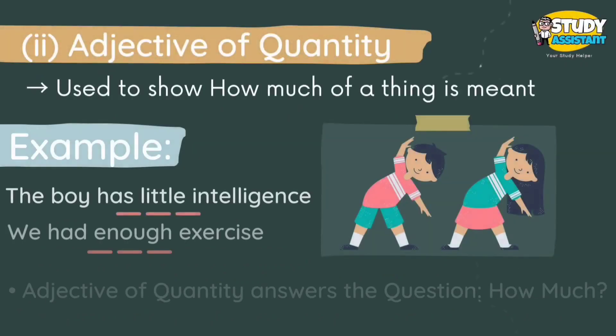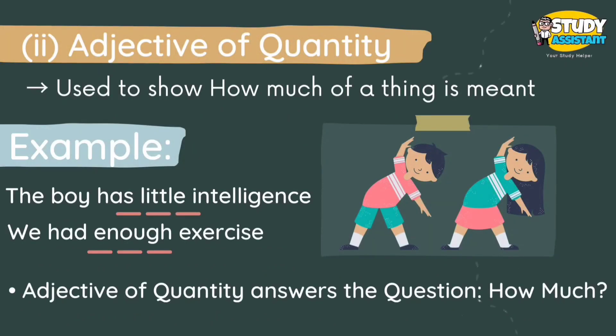The next kind is adjective of quantity. It is used to show how much of a thing is meant. For example, 'The boy has little intelligence' and 'We had enough exercise.' Adjective of quantity always answers the question 'how much?'